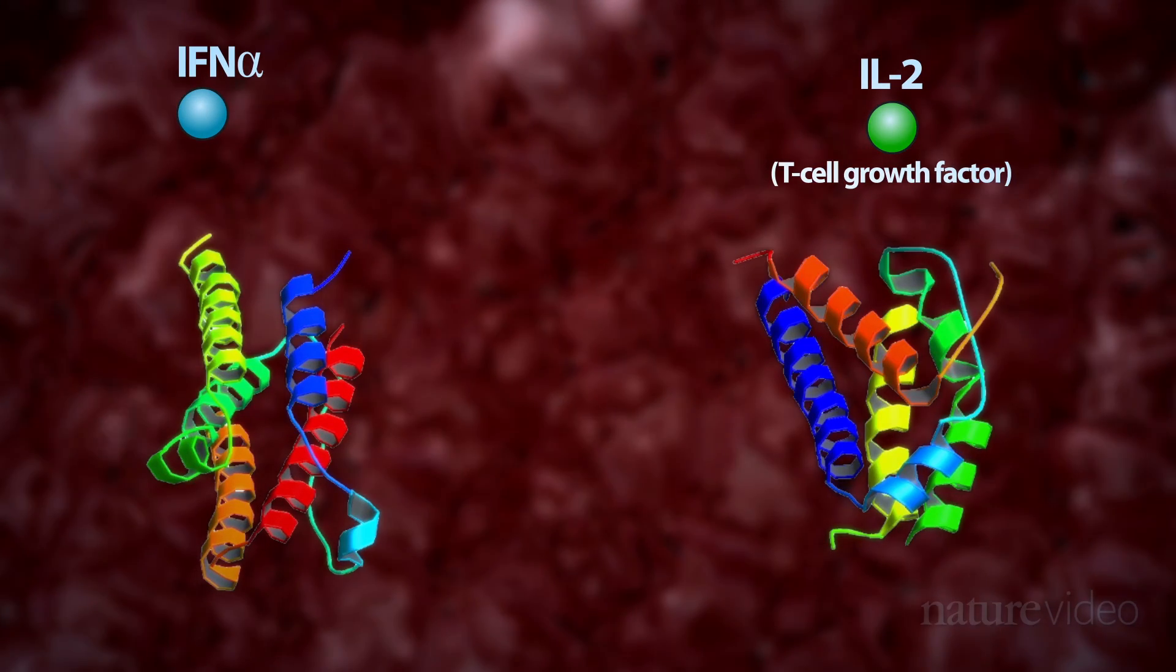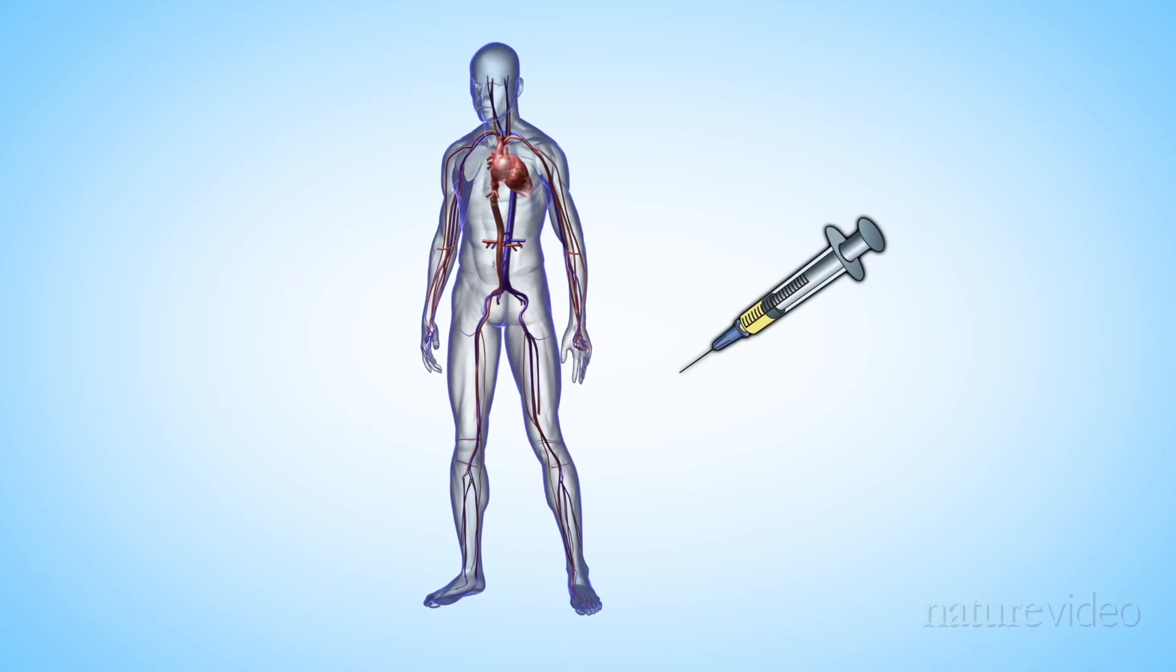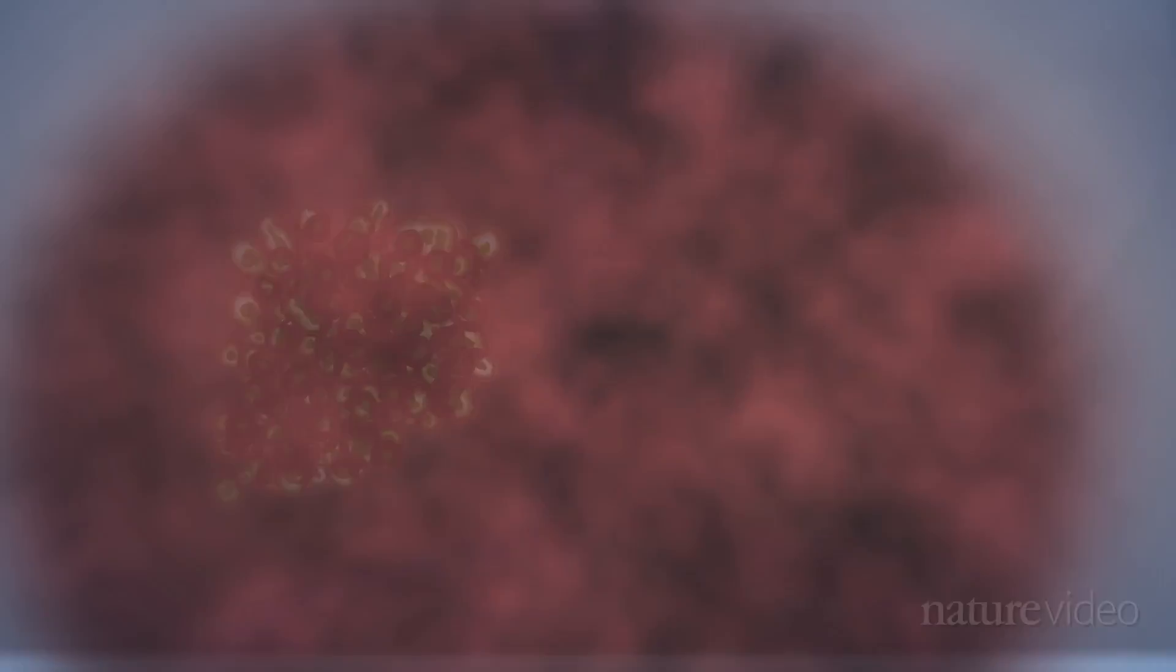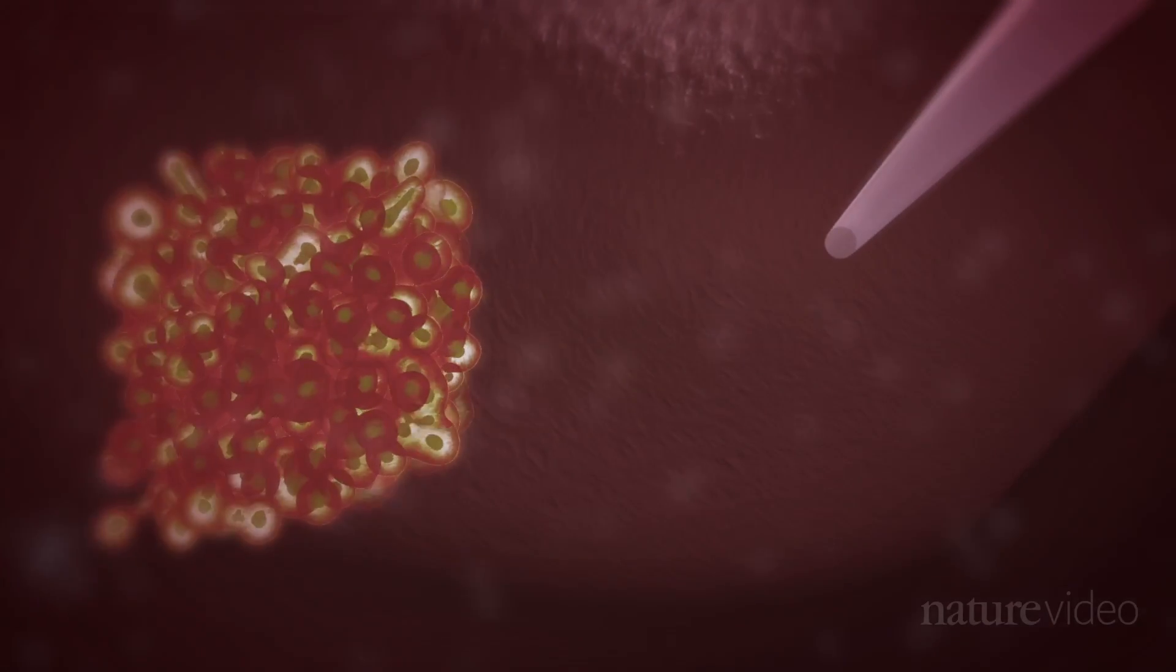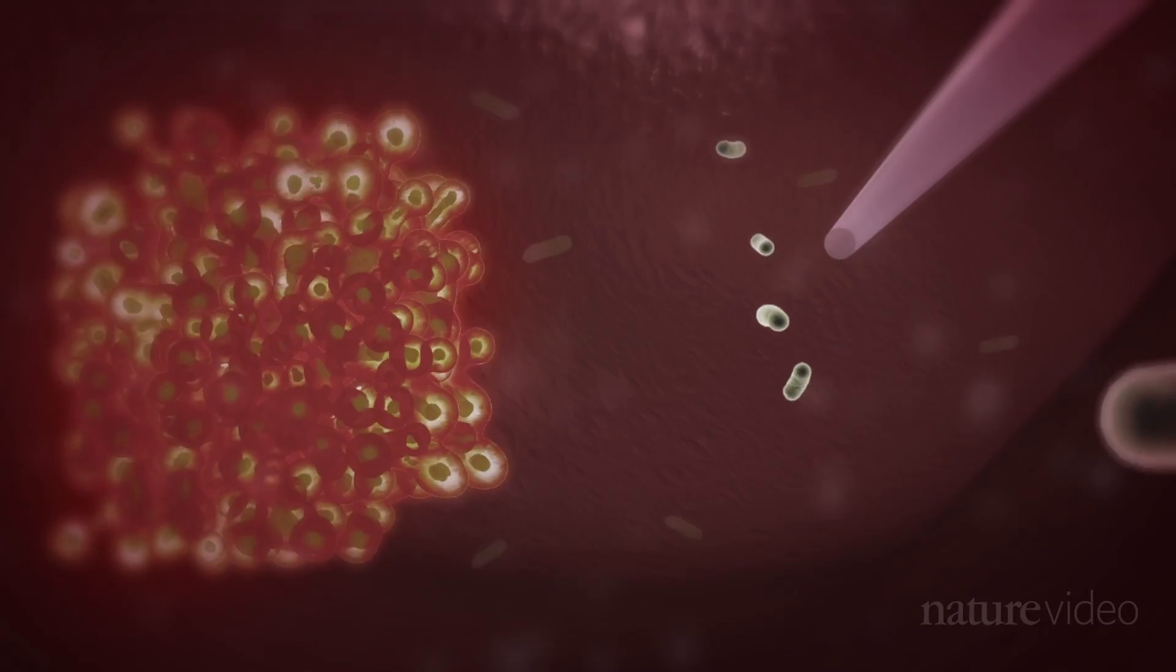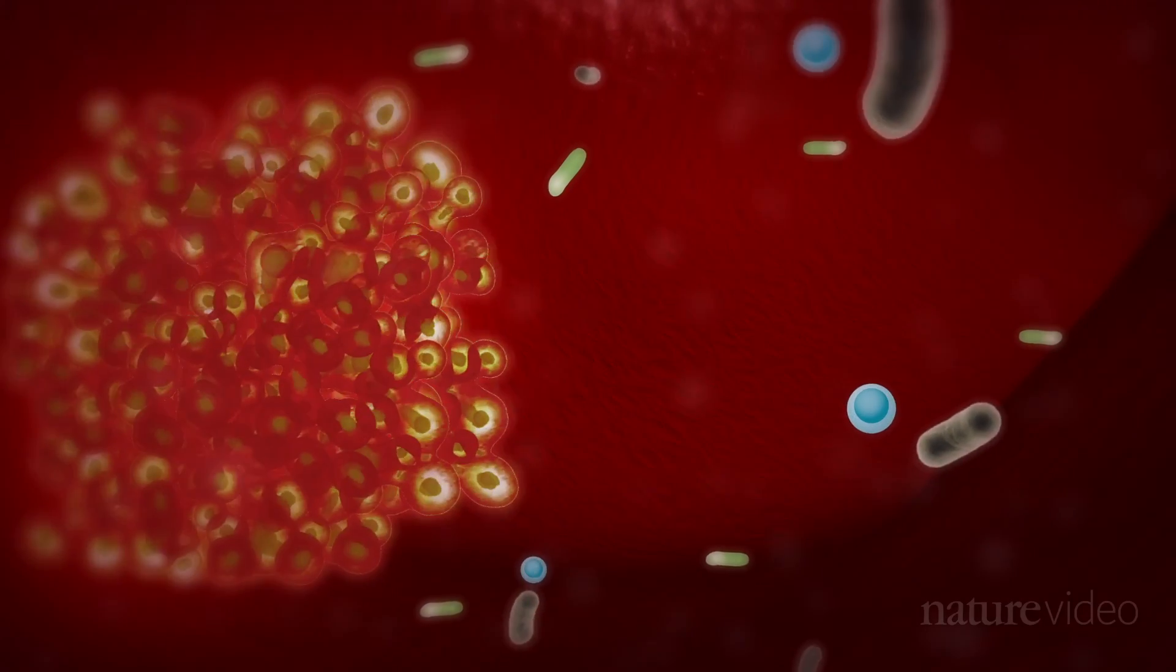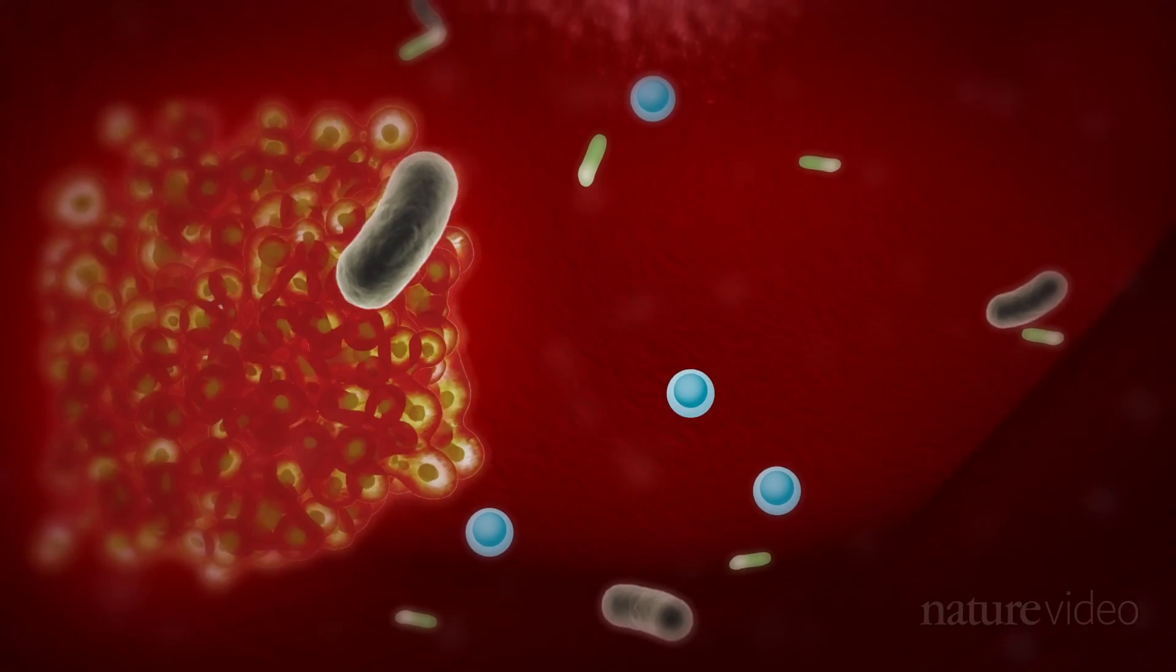Another way to stimulate immune cells in vivo is to inject bacteria, like William Coley did. This has led to a rather surprising use of the BCG vaccine. BCG is normally given to children as protection against tuberculosis. But scientists have found that the weakened bacteria in the vaccine can also help patients with bladder cancer. The bacteria appear to cause inflammation, which increases the number of immune cells around the cancer, helping them to home in on their target.